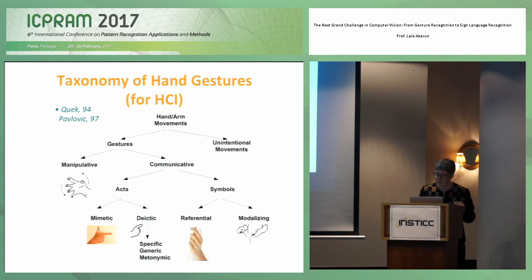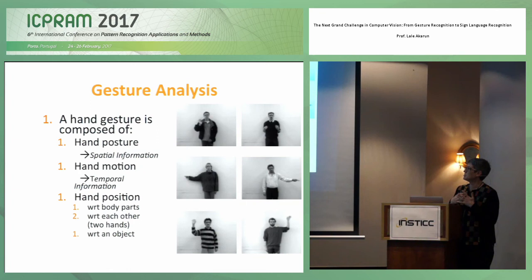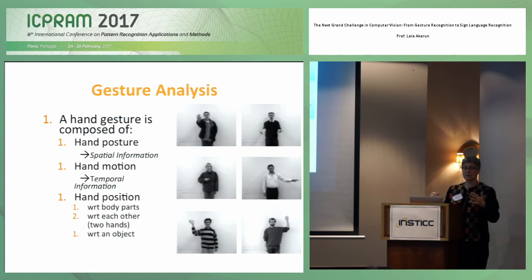Therefore, a gesture consists of a posture — a given shape of the hand — a hand-arm movement, and spatial information about where I perform the gesture with respect to the 3D space around me or with respect to body parts. So if I do like this, it means something; if I do like this, it means something else.